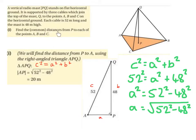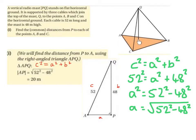Part 1: find the common distances from P to each of the points A, B and C. So we want to find the distance between A and P, P and C, and P and B. We will find the distance from P to A using the right angle triangle APQ. It is actually a right angle triangle, because this is a vertical mast and this is the horizontal ground, so the angle at P must be a right angle.